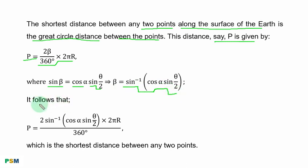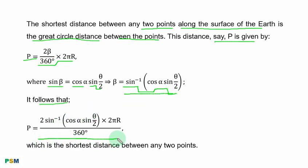It follows that you substitute beta with this result, giving the formula in its final form, which is the shortest distance between any two points on the surface of the Earth.